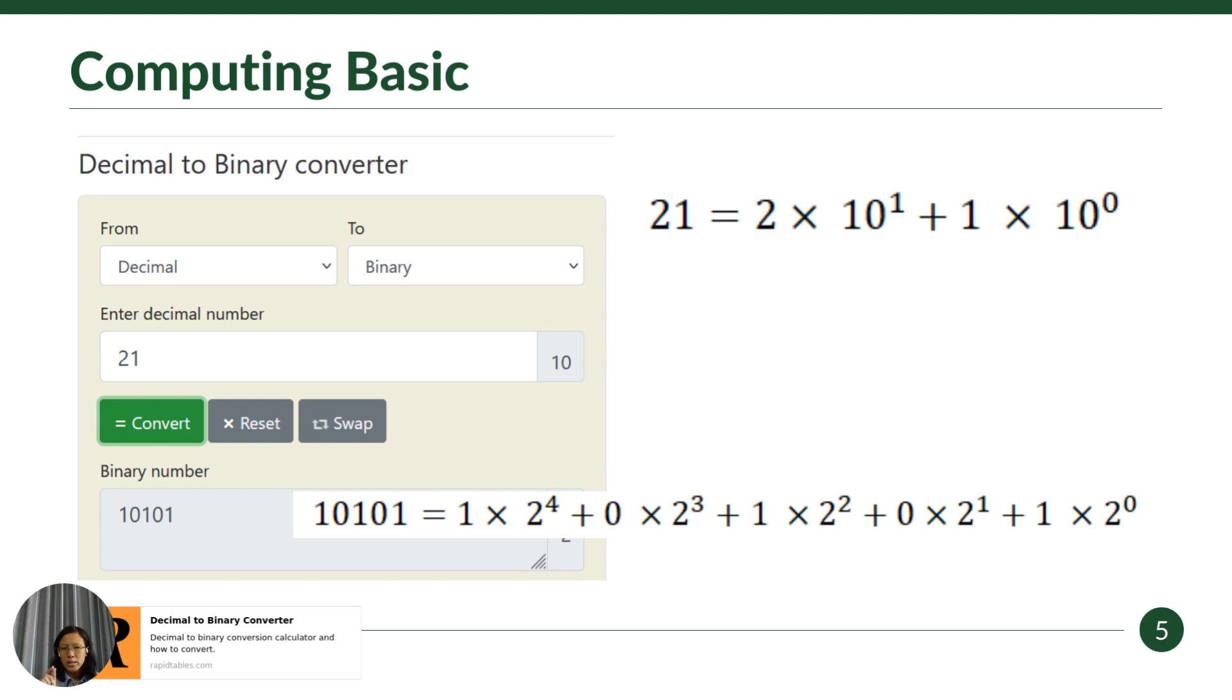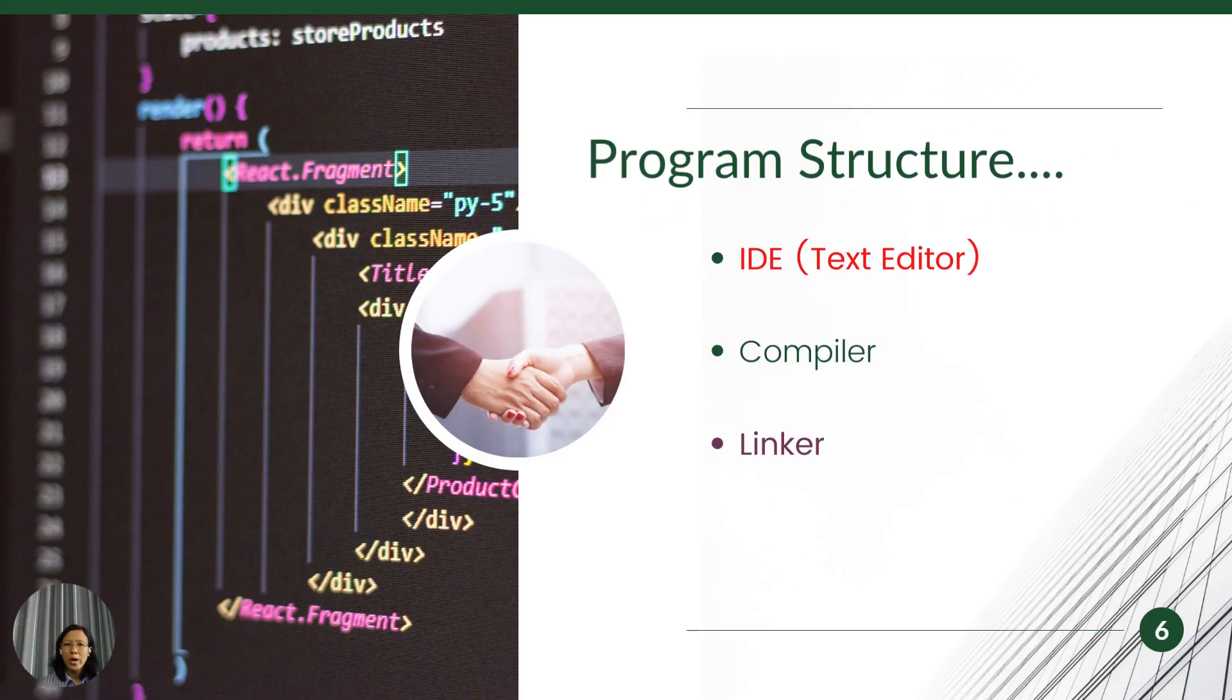But when you convert it to the binary, every place, every place is called bit. Every bit holds only either 0 or 1. That's why it is called binary. And then you create a number using this binary number. There are many software tools here. You can convert from the decimal to binary. Good news is you don't need to worry too much on this. I just want to give you a basic understanding of how the computer works.